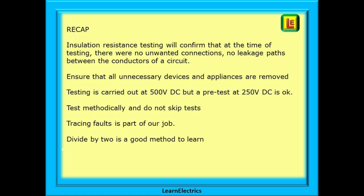And there we are — a simple introduction to insulation resistance testing. Insulation resistance testing will confirm that at the time of testing there were no unwanted connections and no leakage paths between the conductors of a circuit. You must ensure that all unnecessary devices and appliances are removed, and the testing should be carried out at 500 volts DC, though a pre-test at 250 volts DC is okay. Test methodically — do not skip the tests. The tracing of faults is a necessary part of the job; the more you do it, the better you become.